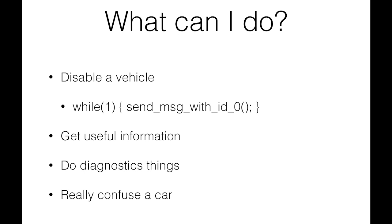Some really simple examples: you can actually disable a vehicle by just sending a message with ID 0 in a loop — that will disable a car. You can also get useful information like speed, RPM, and GPS coordinates on some vehicles. All kinds of data is available on this bus.